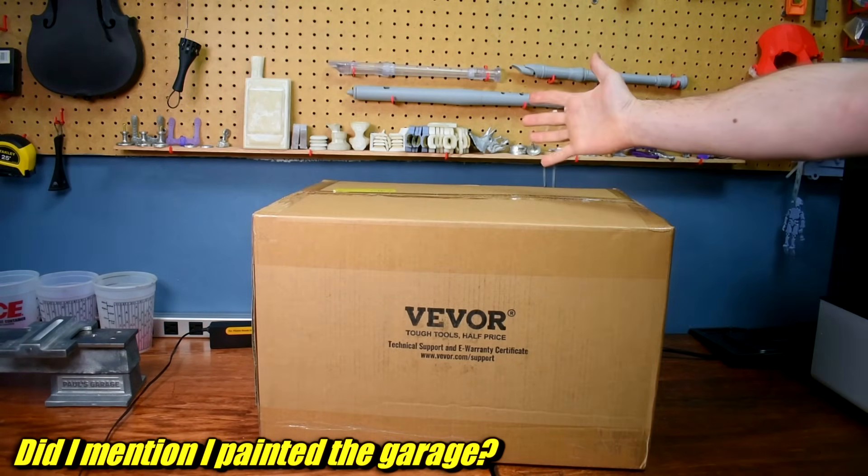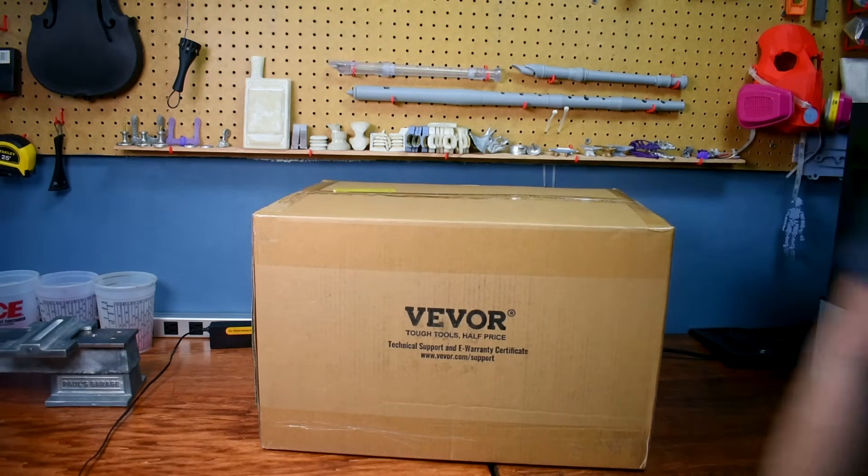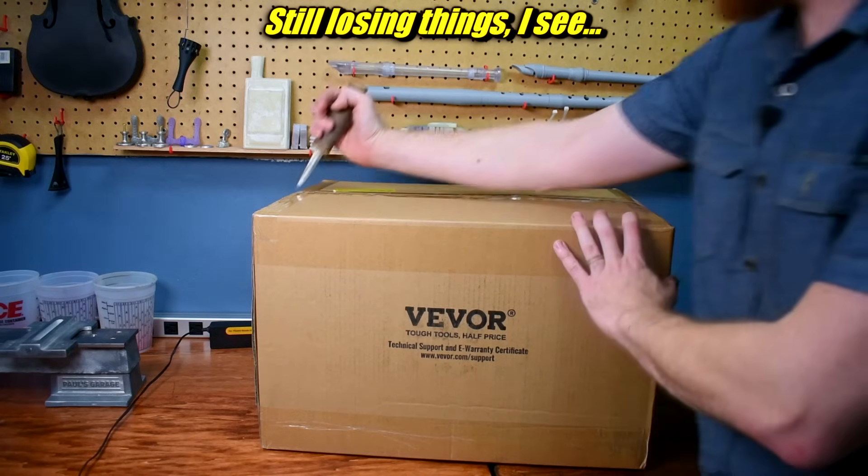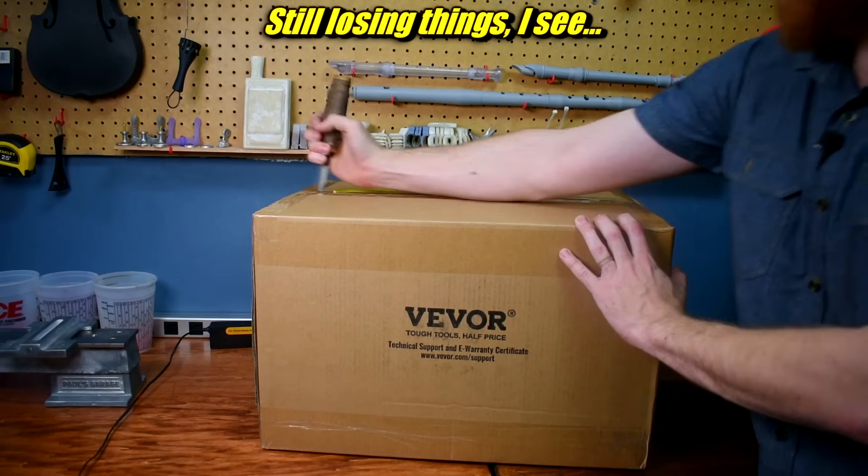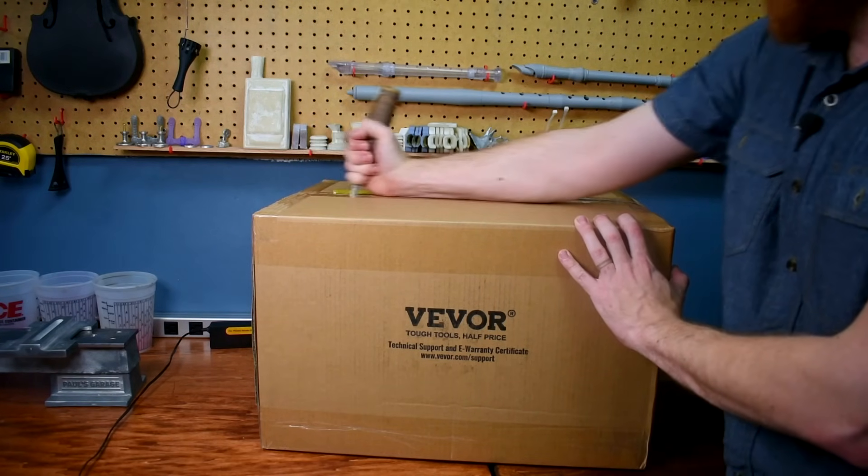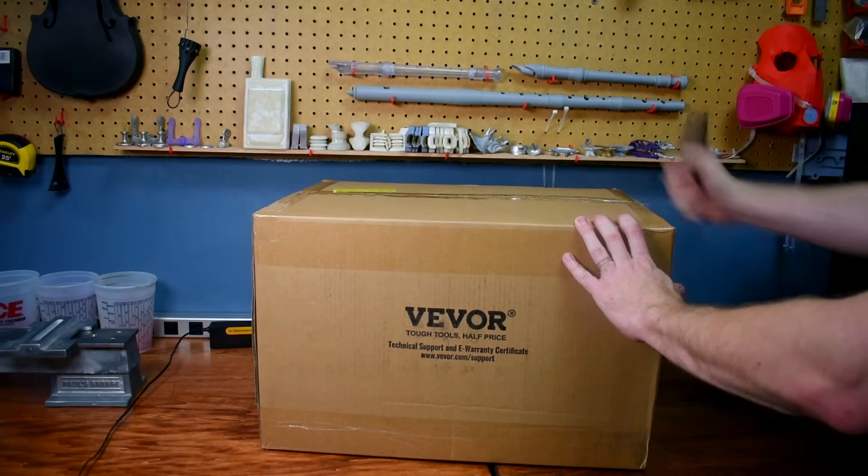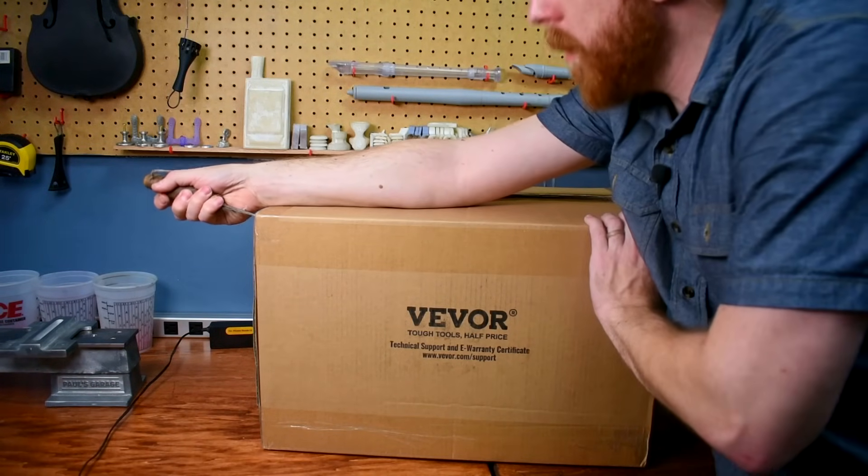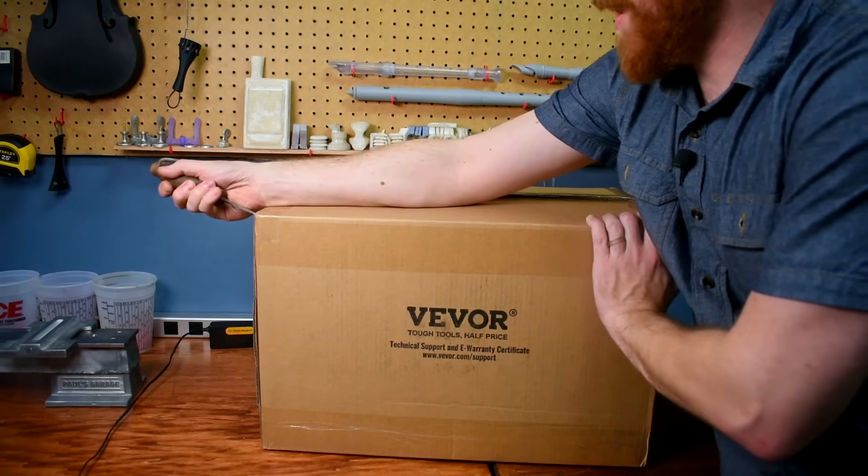New burnout oven. Let's see what's in the box. Where's my knife? Here it is. So this is like a desktop, benchtop, kiln, burnout oven kind of deal. I want to see if it works for burning out those flasks.